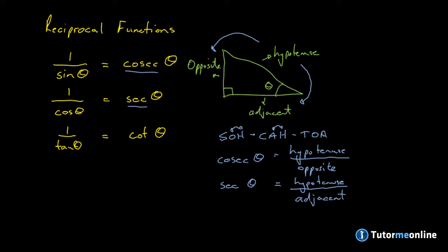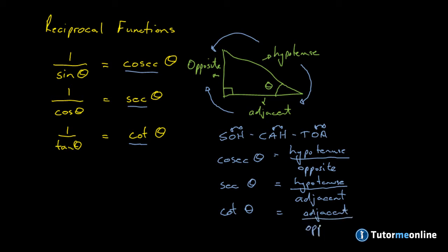And finally, the reciprocal for tangent is cotangent. We swap the TOA part around, giving us the adjacent side over the opposite side. So cotangent of theta is the adjacent over the opposite side.